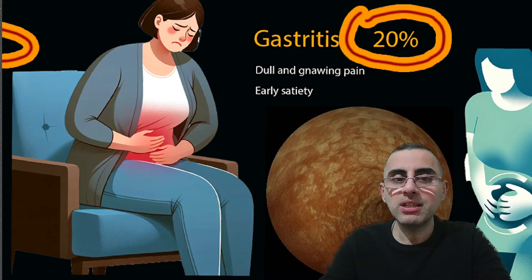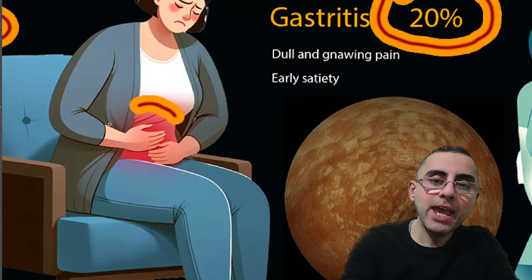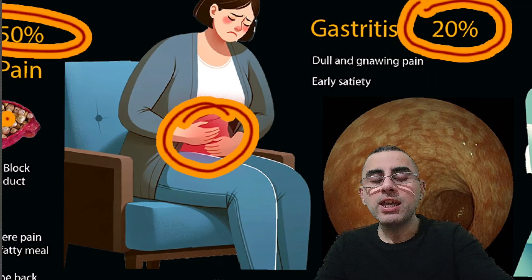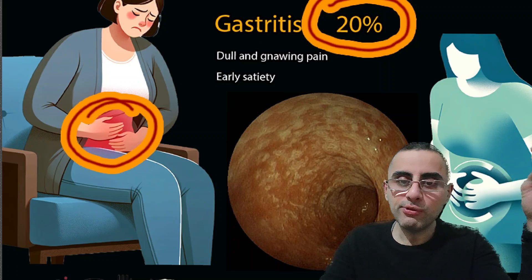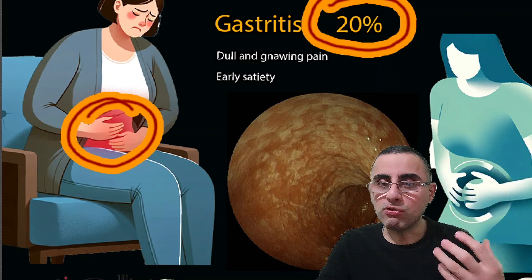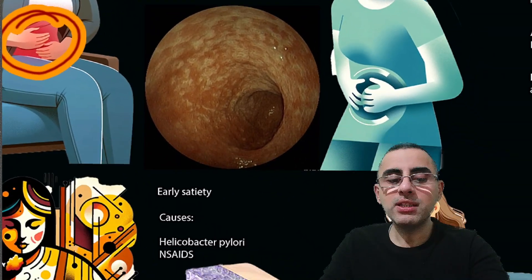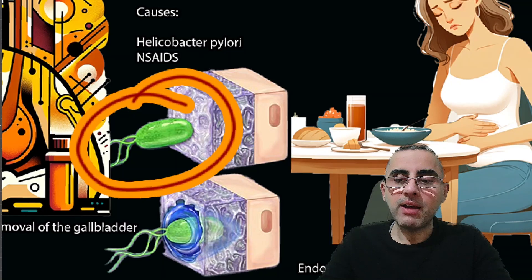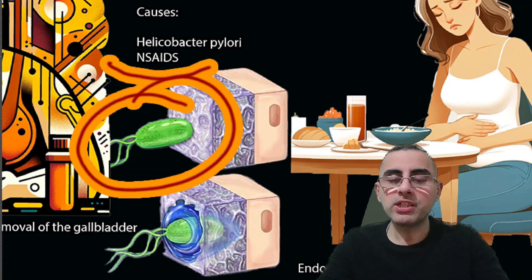The second most important cause of upper right abdominal pain is gastritis, responsible for around 20% of cases. It causes dull, gnawing pain, and the person feels early satiety — meaning when you eat even a small amount of food, you already feel full. Gastritis is usually caused by the bacteria Helicobacter pylori, which can infect the gastric lining and cause inflammation.